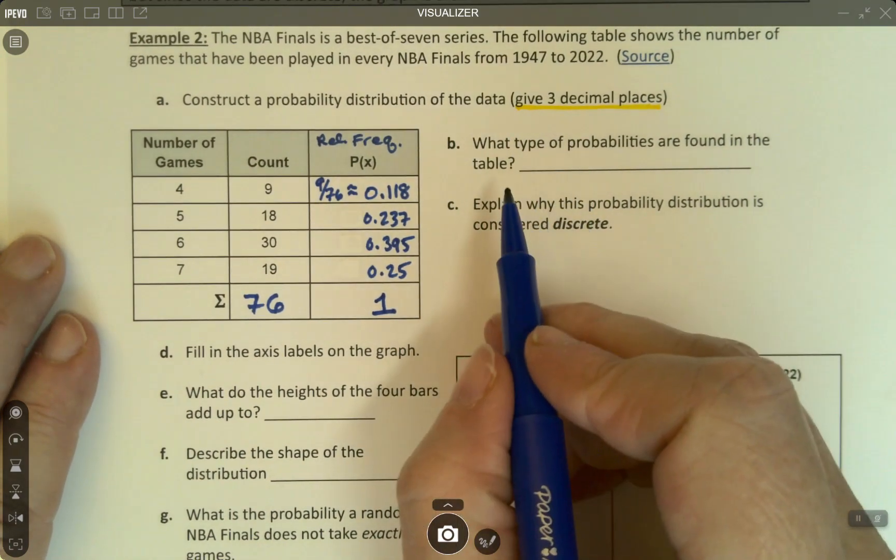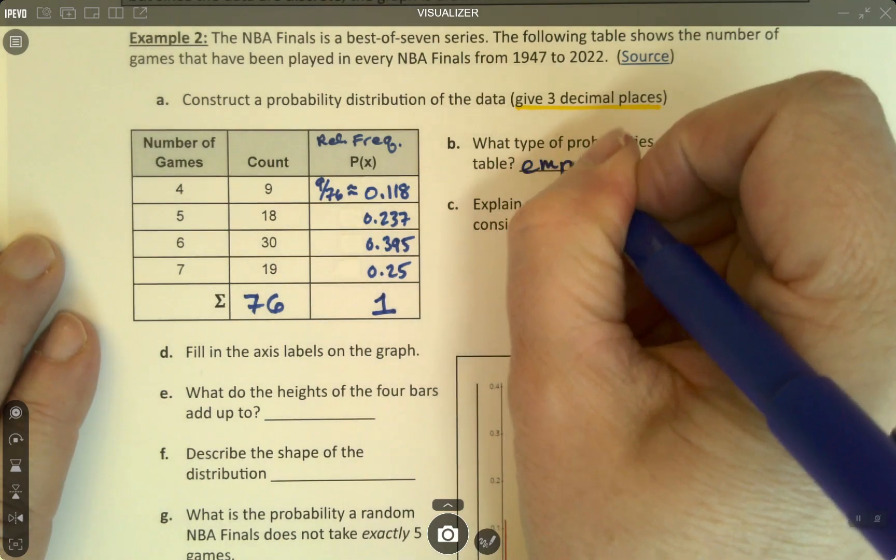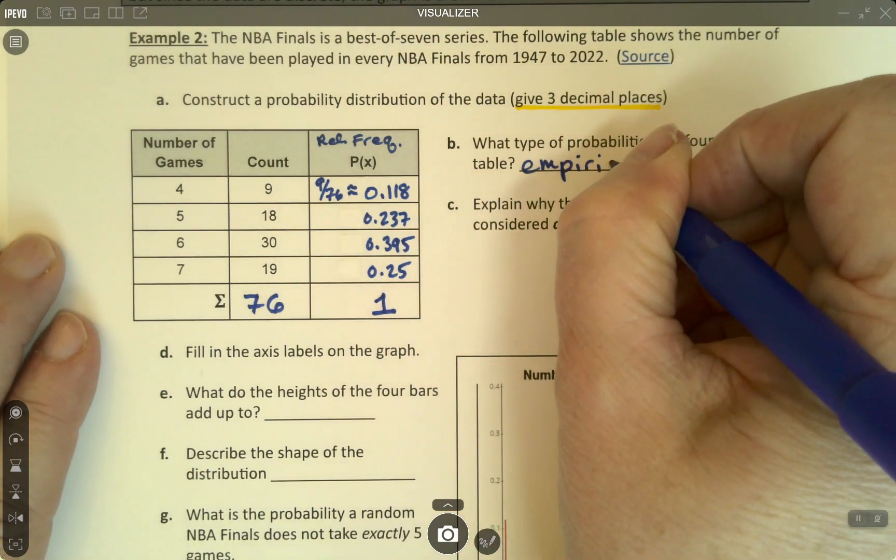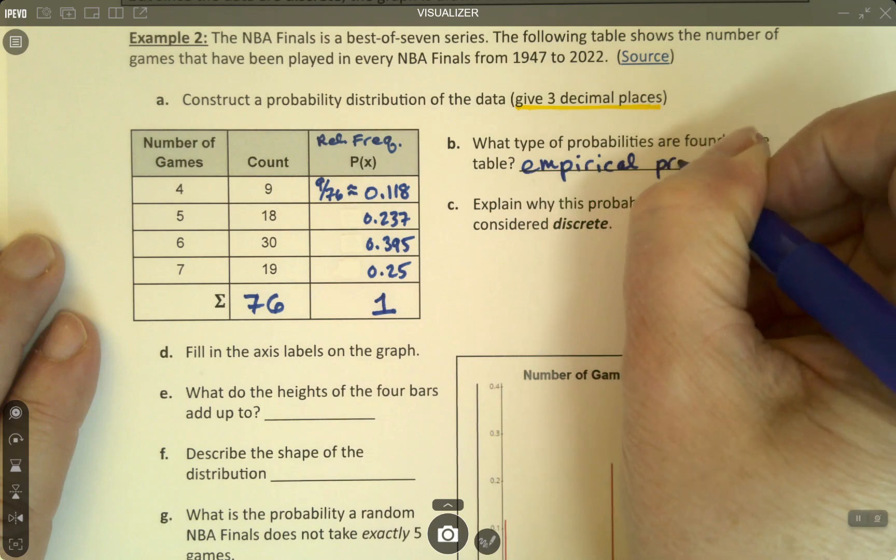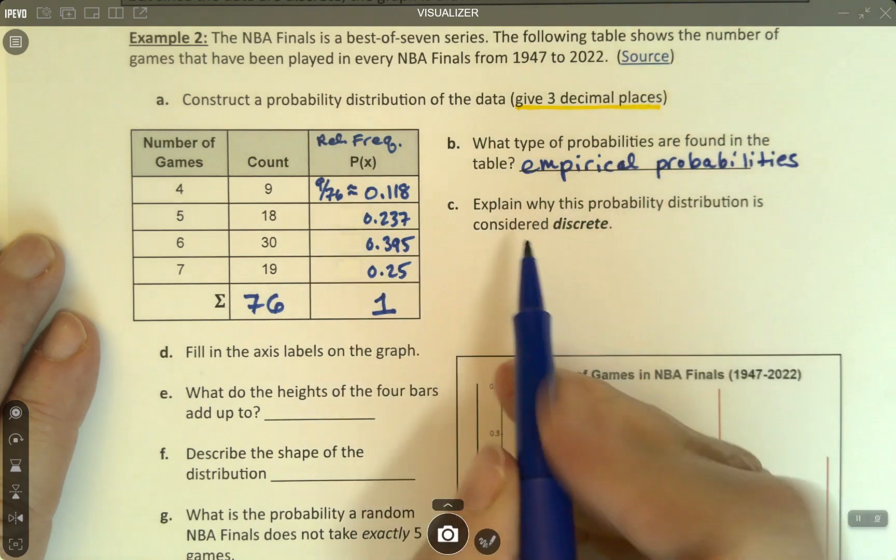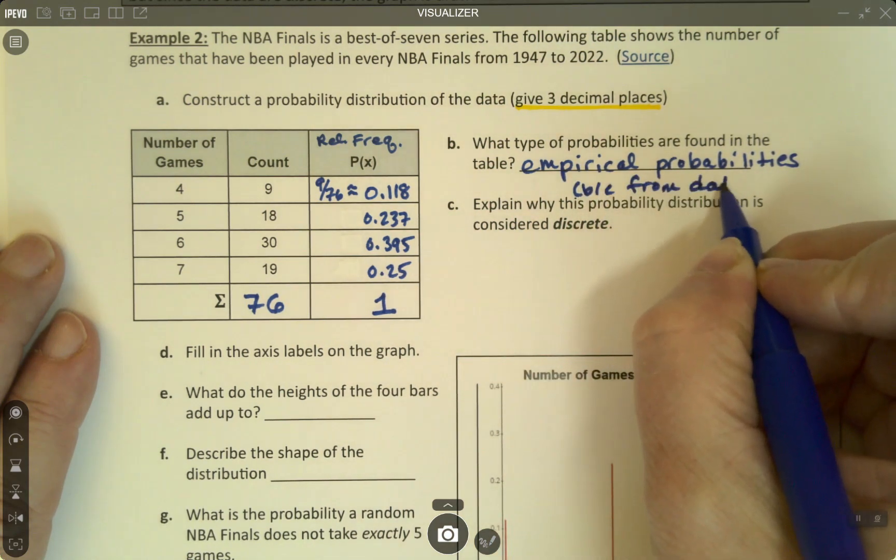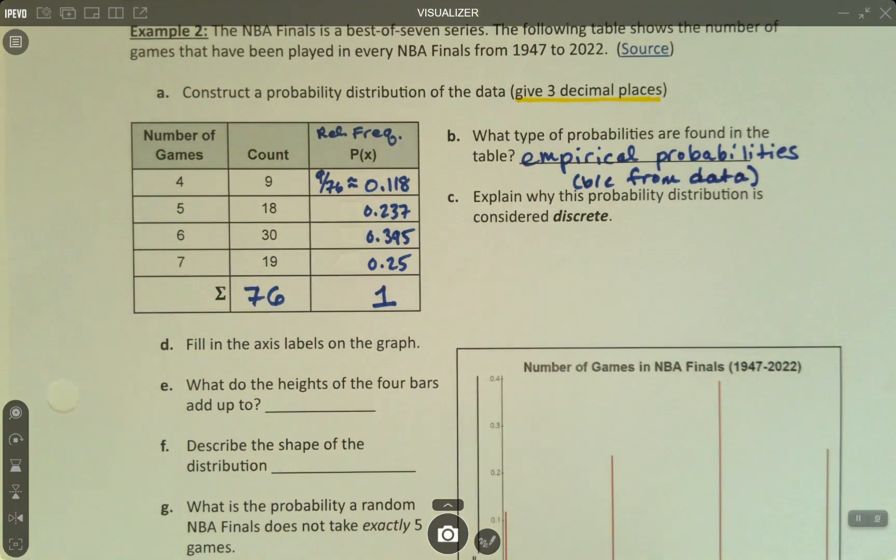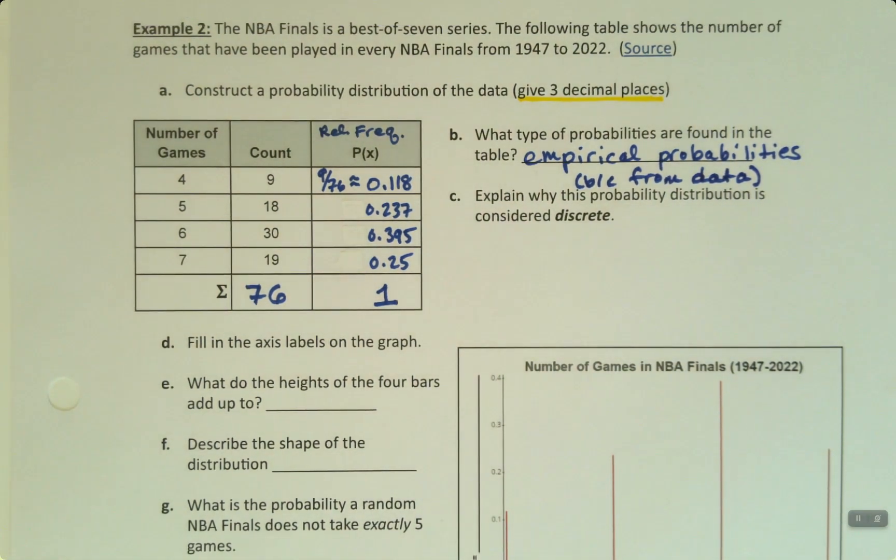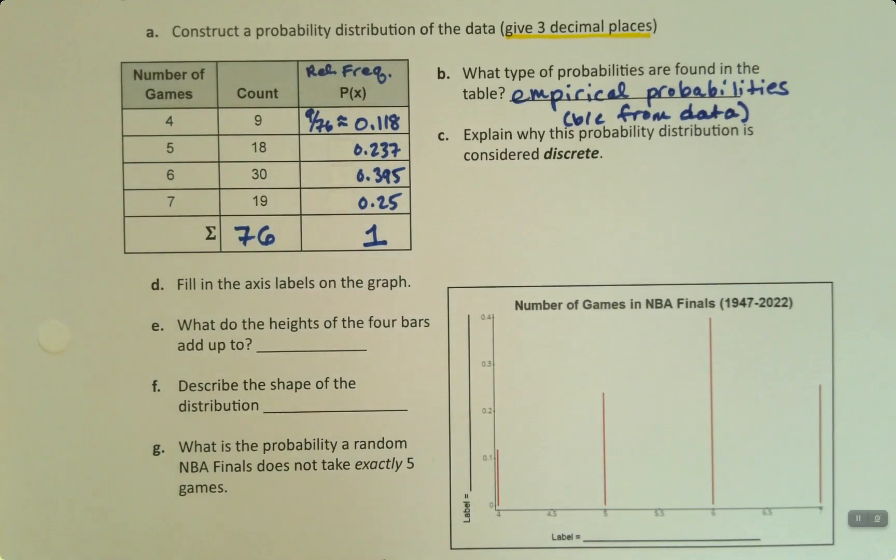What type of probabilities are we finding here? We learned this in section 5.1. These are empirical probabilities because they're from data. It didn't ask why, but just a reminder. When you have records and data, that's empirical probability. It's not classical. Classical is things like cards and dice.